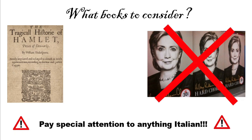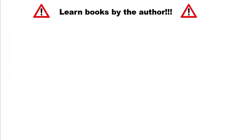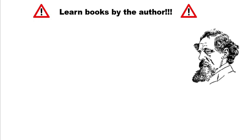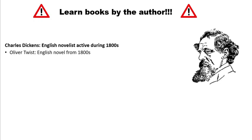Now that we know what literature is, how do we begin to study for the literature section? Well, you study books by the author. What I mean is that you should learn facts about the author and then apply them to the books, because this becomes a much more efficient way to study. For example, with Charles Dickens, you need to know that he was from England, so he's an English author, he was a novelist, and he was active during the 1800s. Then you also need to know a few of his books.